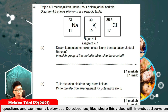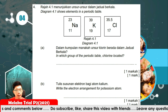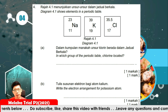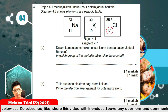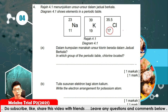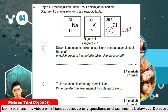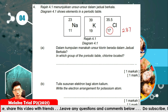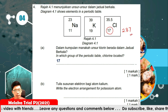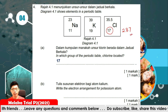Question number 4. A diagram shows elements in the periodic table. In which group is chlorine located? Chlorine has proton number 17, so its electron arrangement is 2, 8, 7. Therefore it is in Group 17 because it has 7 valence electrons.